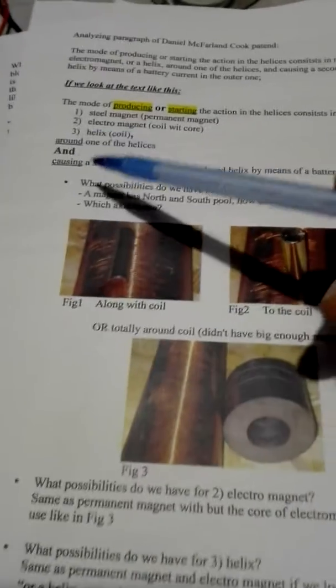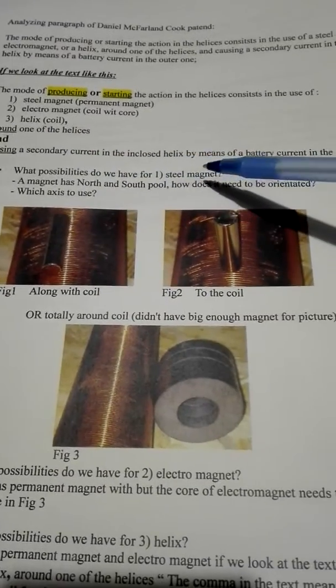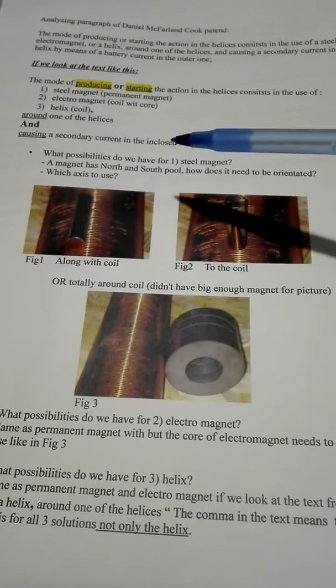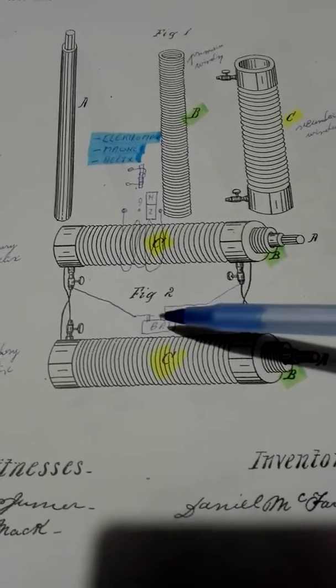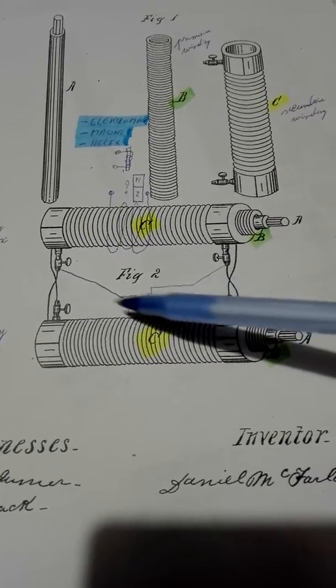And then he also states and causing a secondary current in the enclosed helix by means of a battery current in the outer one. So this would mean that we have to make a current running through this coil with a battery.